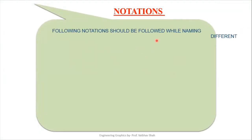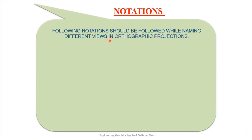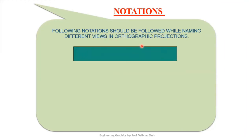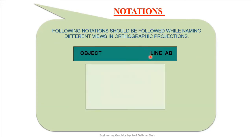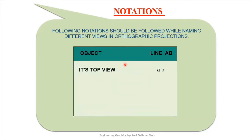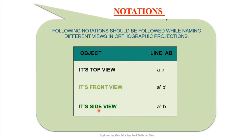The following notation should be followed while naming different views in orthographic projections. Our object is line AB. To represent its top view, we will use simple AB without any dash. To represent its front view, we will use A-dash B-dash, and to represent its side view, we will be using A-double-dash B-double-dash.